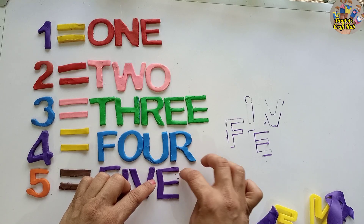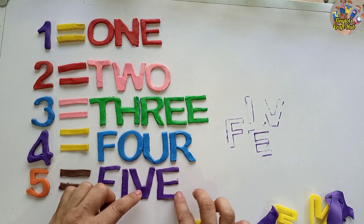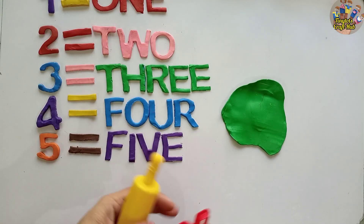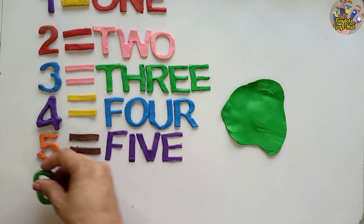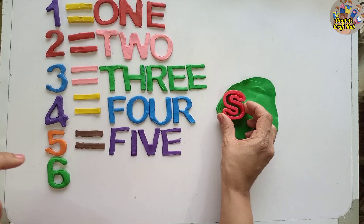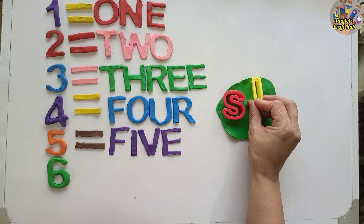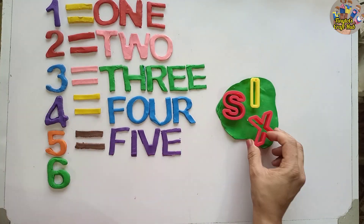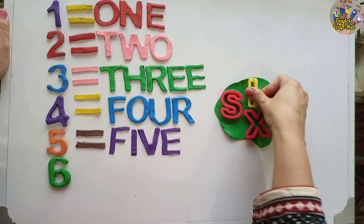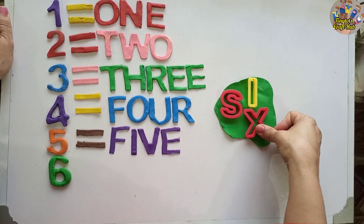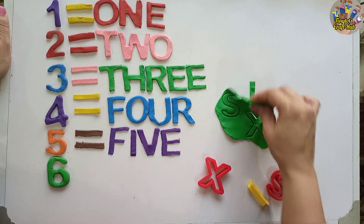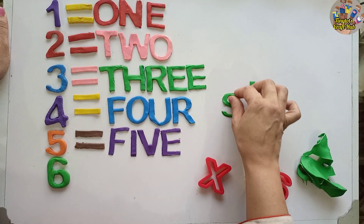I'm using capital letter cutters. The next number is six. Six has the S sound — S, S, S. S-I-X, six. The right spelling of six is S-I-X, six!